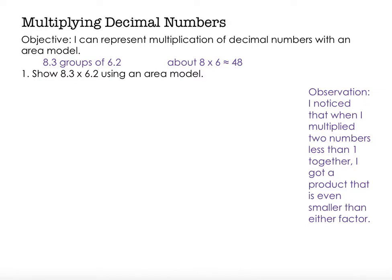So 8 and 3 tenths is about 8, and 6 and 2 tenths is about 6. So when I multiply 8 and 6 together, I'm going to have a product that's going to be close to 48. It's actually going to be more than 48 because it's a little more than 8 times a little more than 6. So I'm going to guess the product will probably be around 50, but we'll see how that goes.